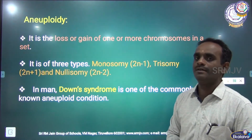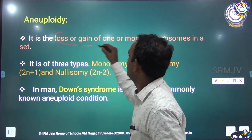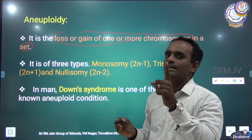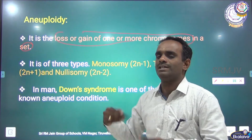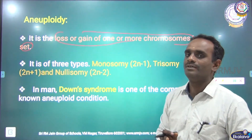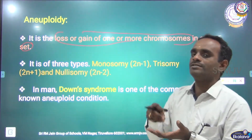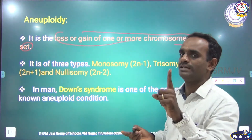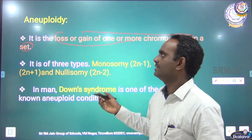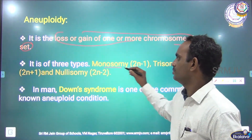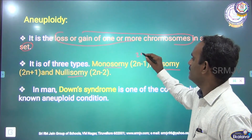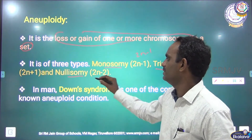Next we move on to aneuploidy. It is a condition in which there is loss or gain of one or more chromosomes in a set — in any particular pair, whether the first, second, third, or 23rd pair. There are three types: monosomy (2N minus 1), trisomy (2N plus 1), and nullisomy (2N minus 2).